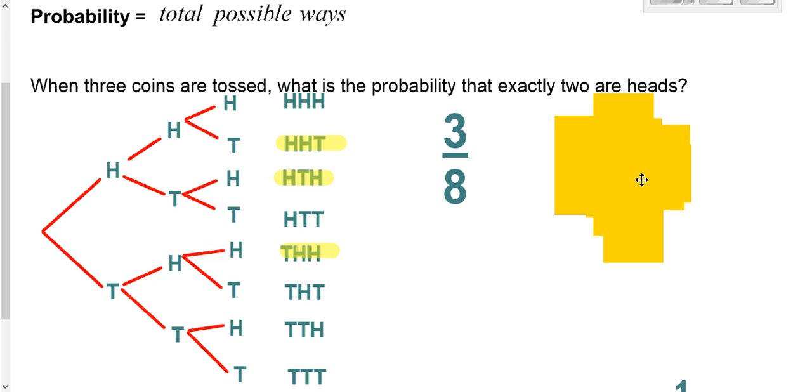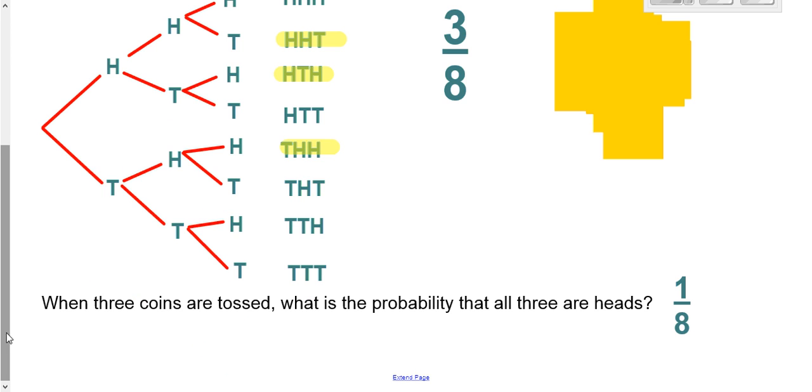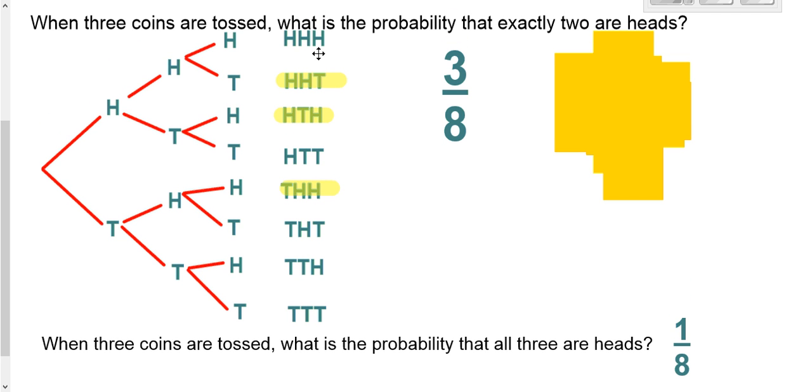Sometimes doing a diagram like this is helpful. So consider this situation: three coins are tossed. What's the probability that they're all heads? Well, we had said up here that that was one way to do it out of eight, so it's one out of eight, or probability of one eighth.